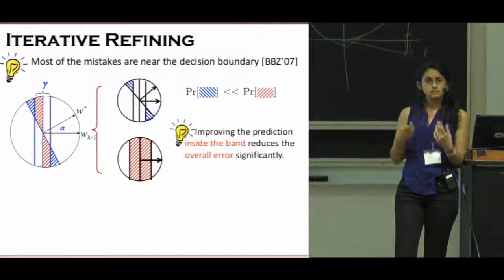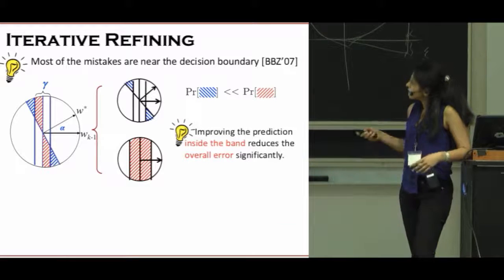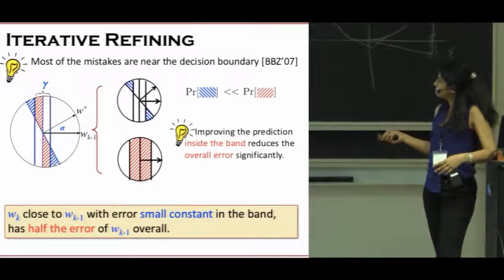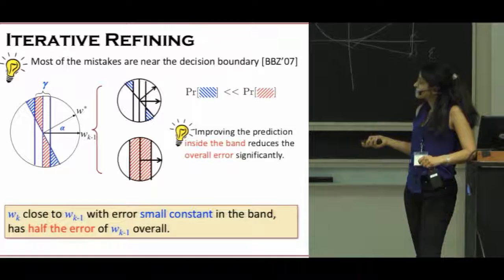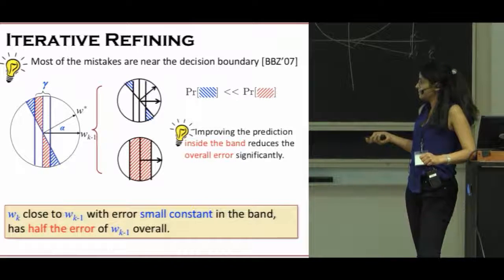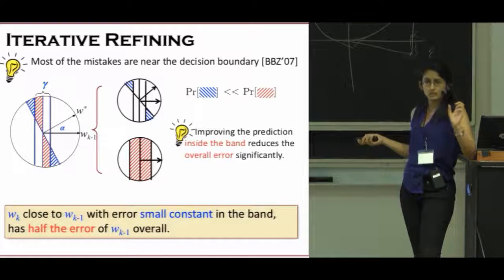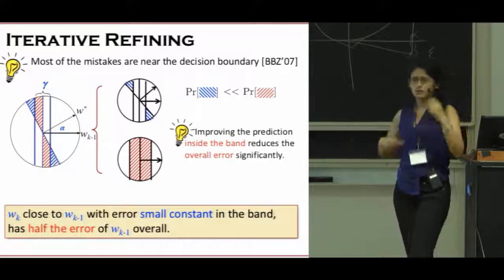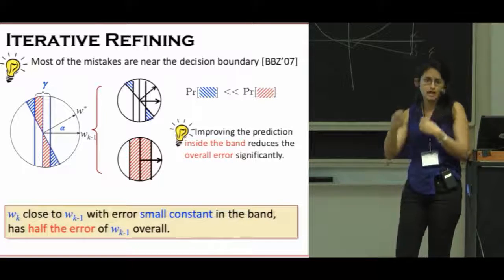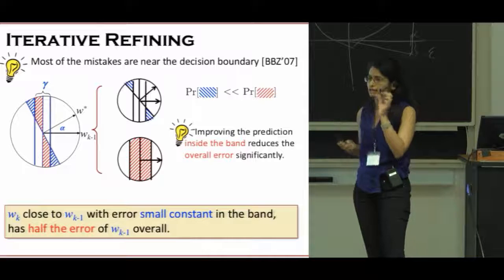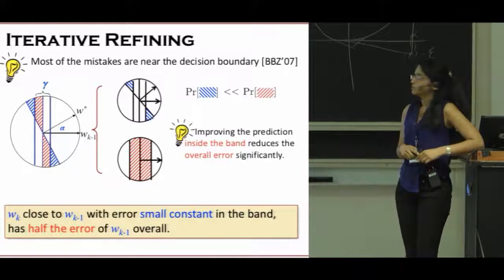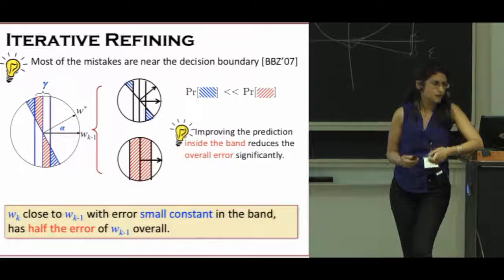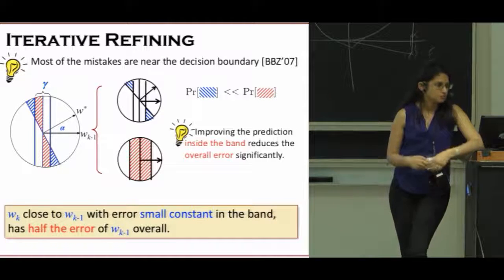So what we want to do is, given any half-space, look at its margin and find the half-space that's doing really well inside the margin, so it has some constant error inside the margin. And it is a half-space, so you can repeatedly continue this. So it's a half-space and has a small angle to our previous guess. These are the two properties that we look for in the band.